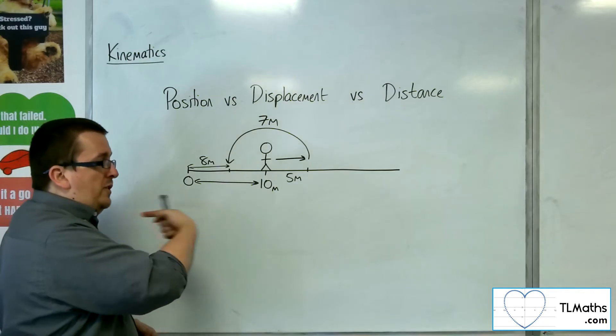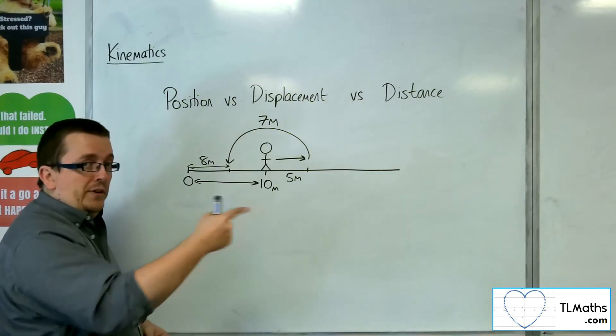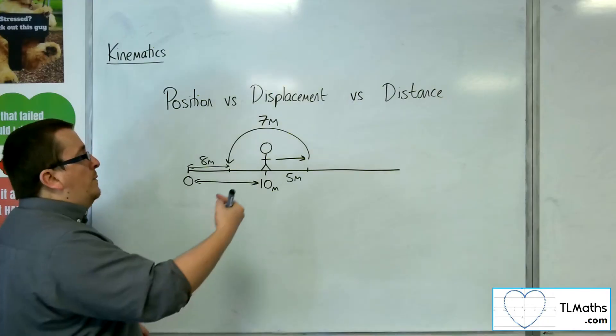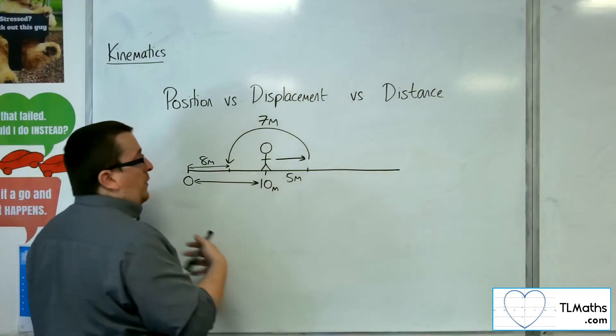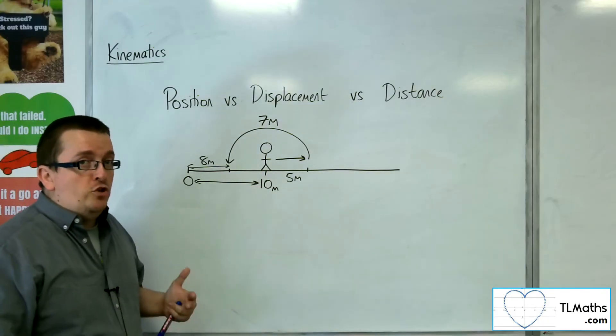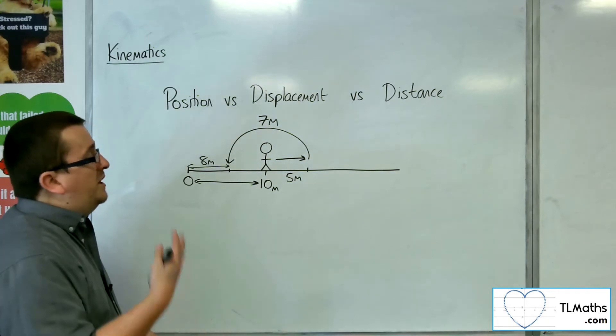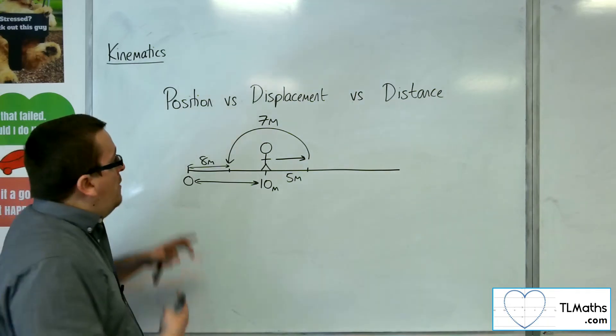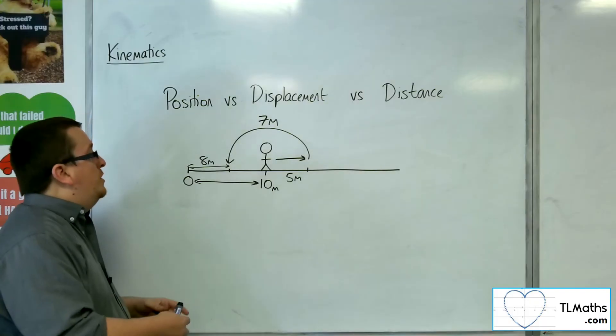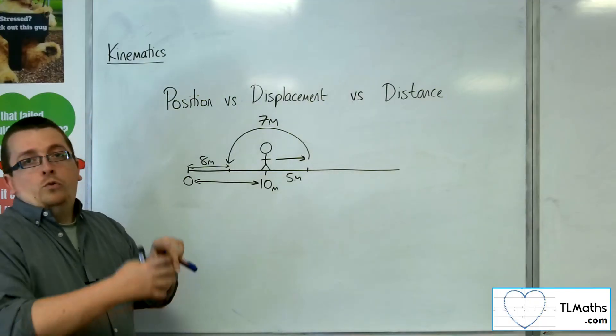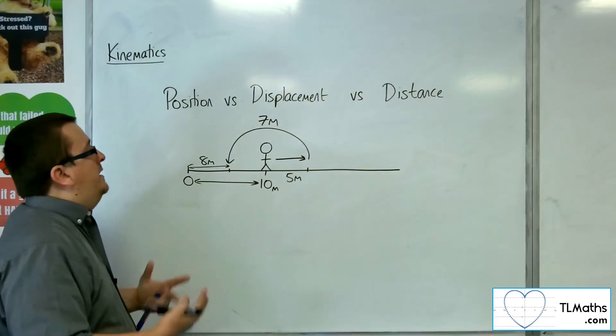So, in the negative direction, if we take that as negative and that as positive, they would be minus 2 metres away from their original position. So, displacement can be measured from anywhere, whereas position is measured from the origin or some other defined position.